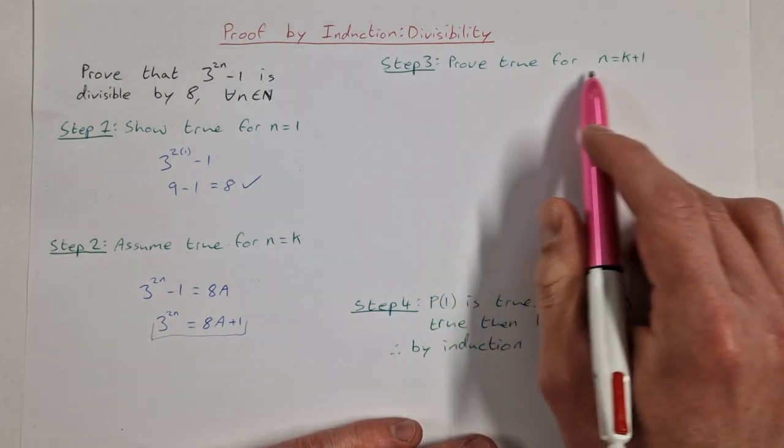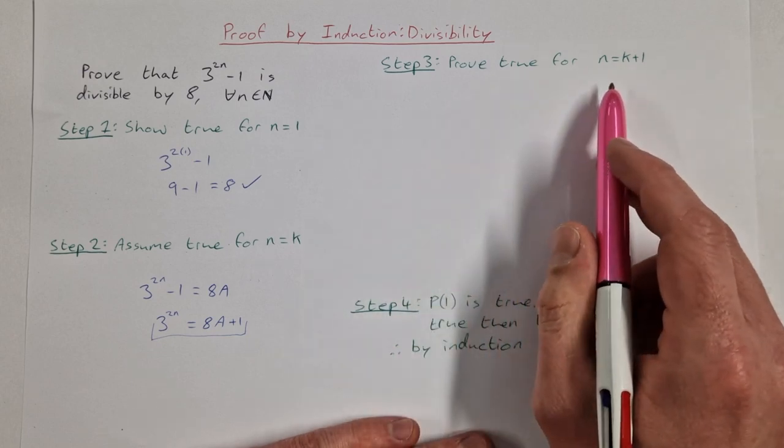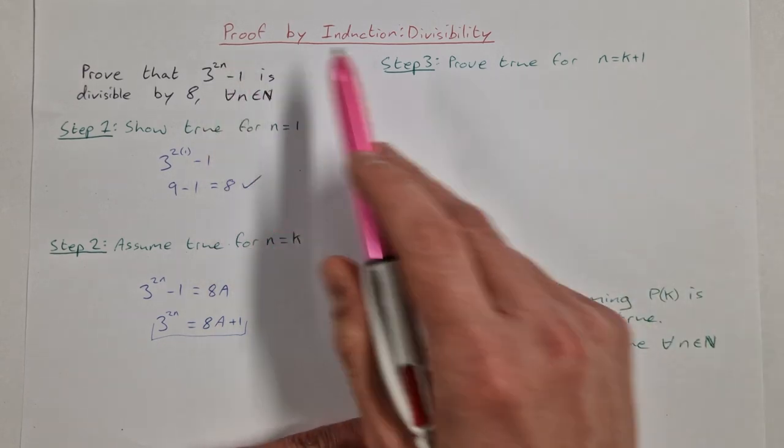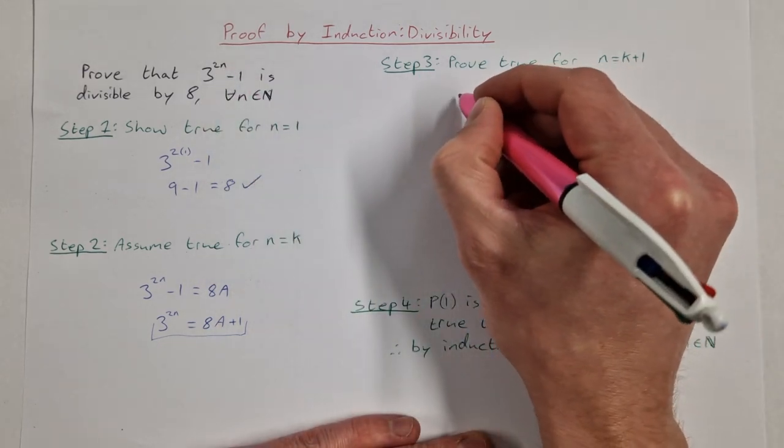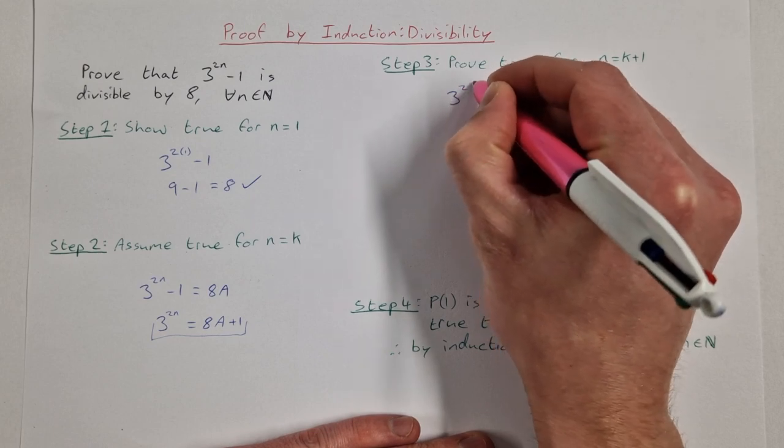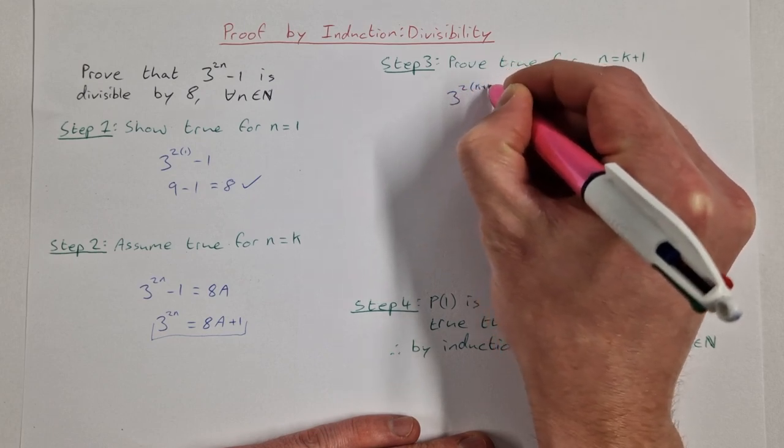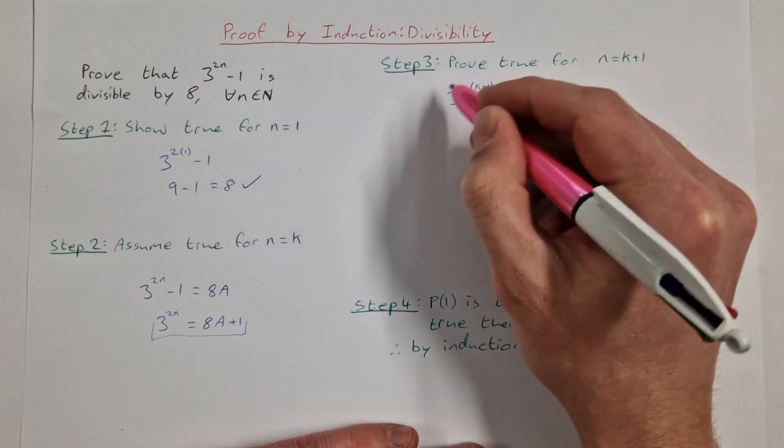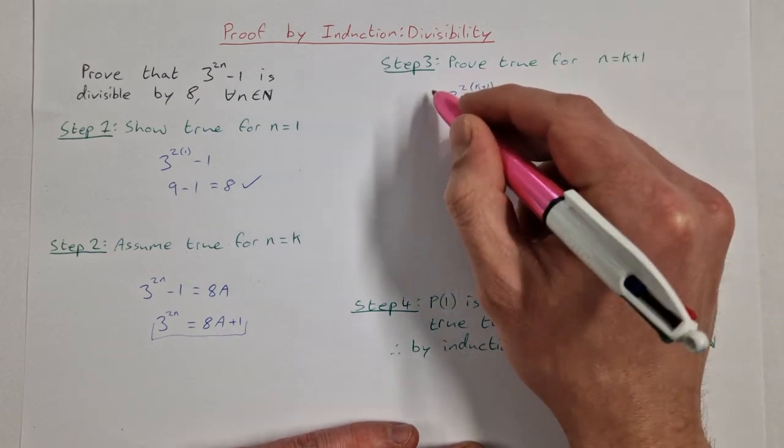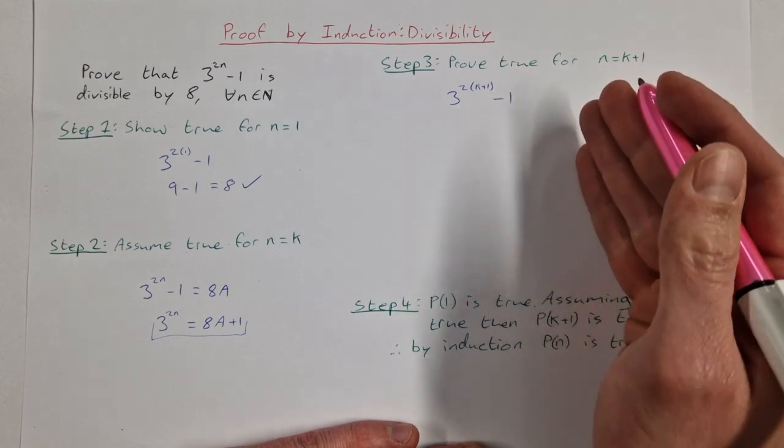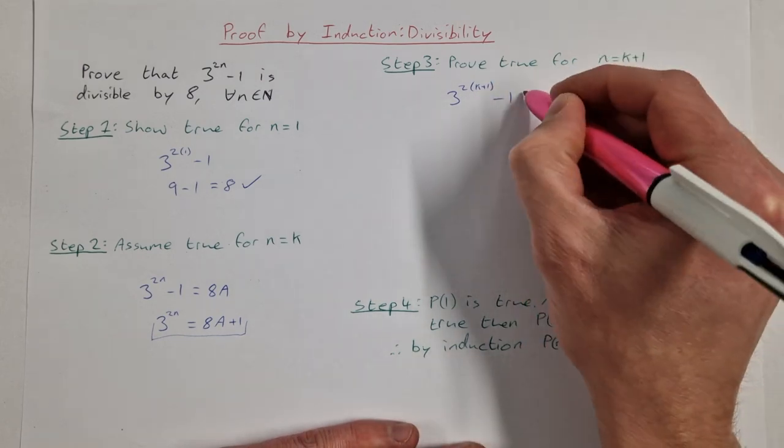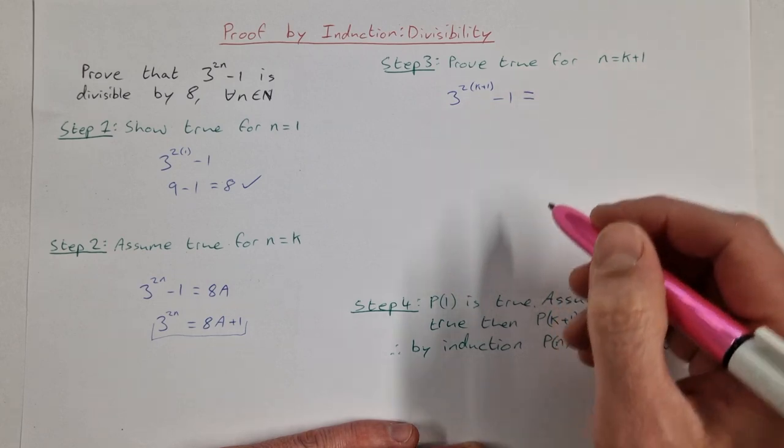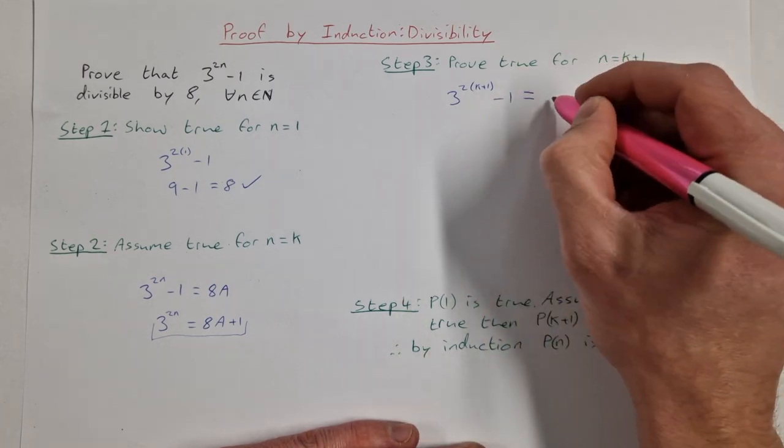Step 3: Prove true for n equals k plus 1. So now what I do is anywhere I have n, I sub in k plus 1. So I'll say 3 to the power of 2 times (k+1) minus 1 is divisible by 8. I'm going to manipulate this now to get it in a form where I have 8 taken out as a factor. I can multiply out the brackets up here.